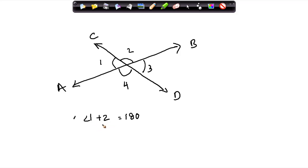Right? Or in other words, angle 1 is equal to 180 minus angle 2, or angle 2 is equal to 180 degrees minus angle 1.